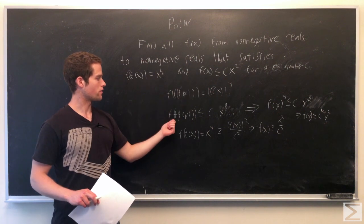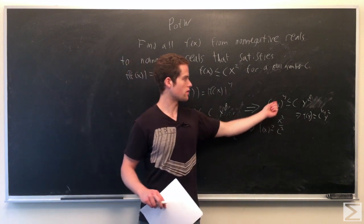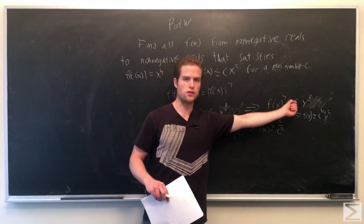On the left side, f of f of 3 f's of y, we show that's just f of y to the 4th, so we have f of y to the 4th is less than or equal to c times y to the 8th.